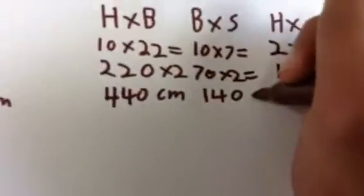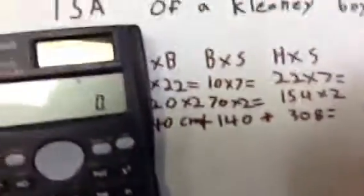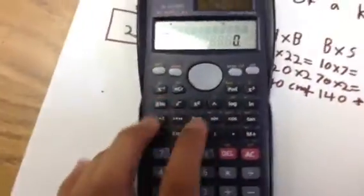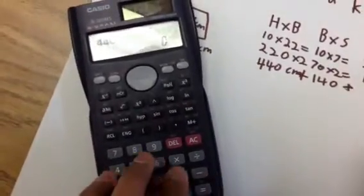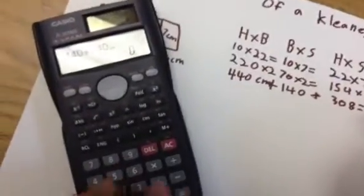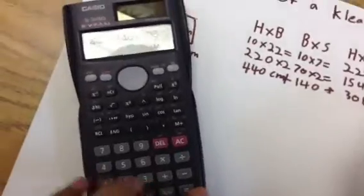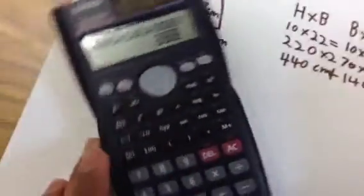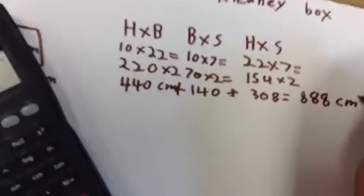And then we add it all up together. So 440 plus 140 plus 308 equals 888 square centimeters.